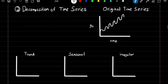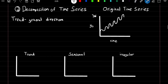Decomposition of time series. Time series in general can be broken down into three major parts. The first is the trend, which represents the general direction that the time series takes over time. Looking at the time series on the right, we can see that it's positively increasing over time — this represents the trend.